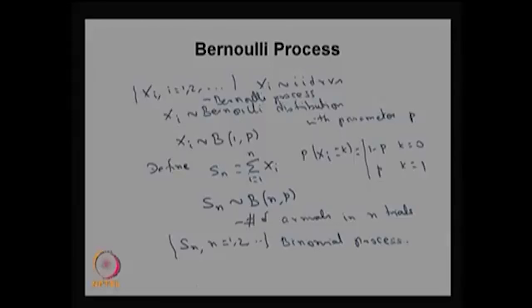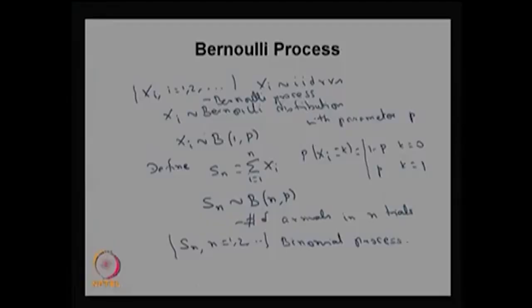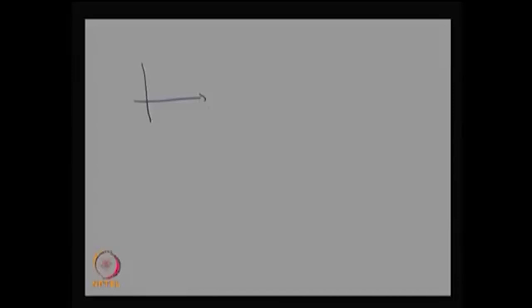Since you have collected arrivals over the discrete values 1, 2, and so on, this is going to be a discrete time arrival process. Similarly, we are going to explain what is the continuous time arrival process, whereas the binomial process here is a discrete time arrival process. Suppose you would like to see the trace of Sn — before that, we can look at what is the trace or sample path of Xi.